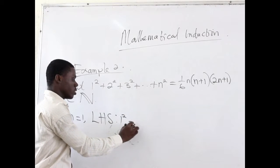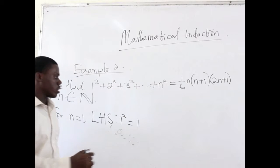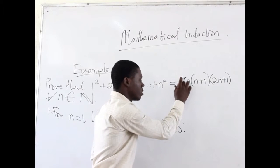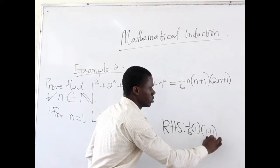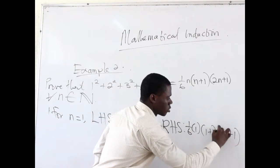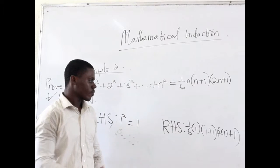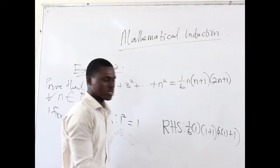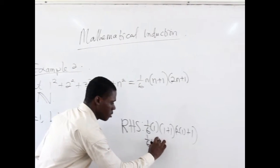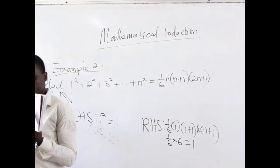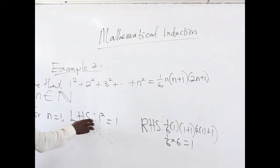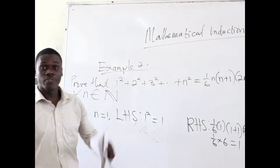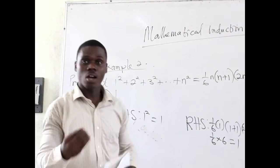We are having a square of 1, which is equal to 1. On the right hand side, we have (1/6) · 1 · (1+1) · (2·1+1), substituting 1 for n. So this gives (1/6) · 1 · 2 · 3. That is (1/6) multiplied by 6, which gives us 1. The right hand side is also 1, same as the left hand side. So the statement is true for the first element of the set of natural numbers — the proof has been anchored.